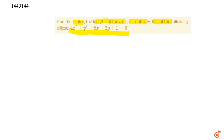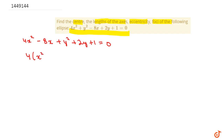Now we will write all the x and y terms together. This will be 4x² - 8x + y² + 2y + 1 = 0.